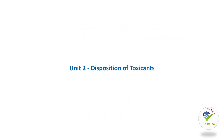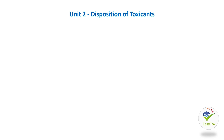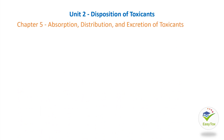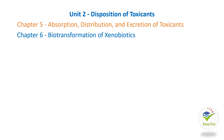Unit 2, Disposition of Toxicants, contains 3 chapters: Chapter 5, Absorption, Distribution, and Excretion of Toxicants; Chapter 6, Biotransformation of Xenobiotics; Chapter 7, Toxicokinetics.